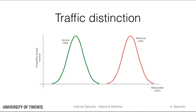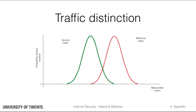Unfortunately for us, the real world is rarely that easy, and most likely the traffic samples will be distributed in a different way. The normal traffic distribution and the malicious traffic distribution will partially overlap, which means that there is a subset of the traffic for which we will not be able to say, based on our metric, if it is malicious or benign. It will simply look the same. This tells us that the intrusion detection process will make errors, and that we might not be able to avoid it.